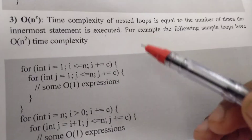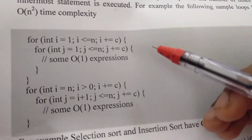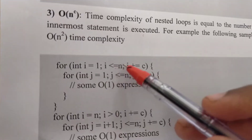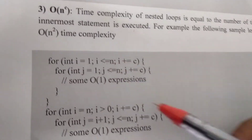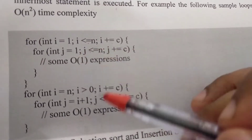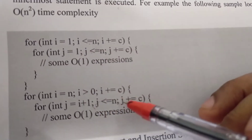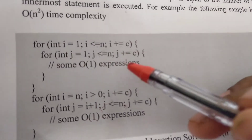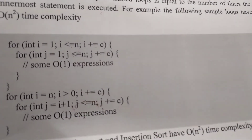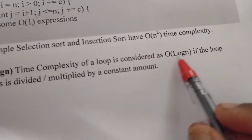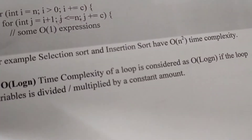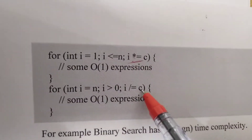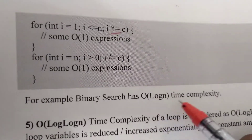For nested loop time complexity, how much the inner loop executes depends on the outer loop. For nested for loops, we measure the time complexity. Order of 1 for simple operations, and order of n squared for the nested loop structure. The loop variable divided or multiplied by a constant gives order of log n.